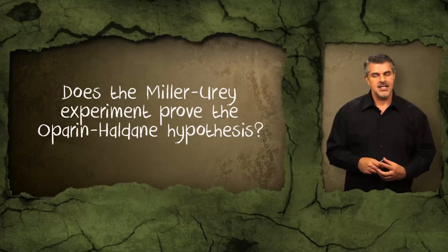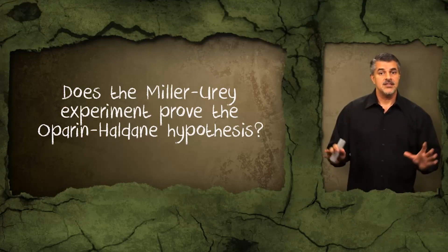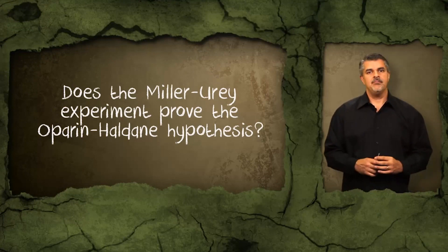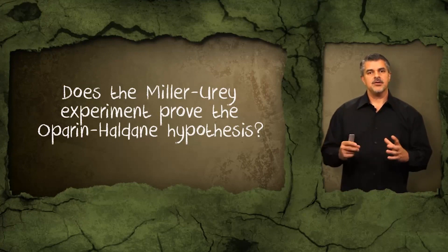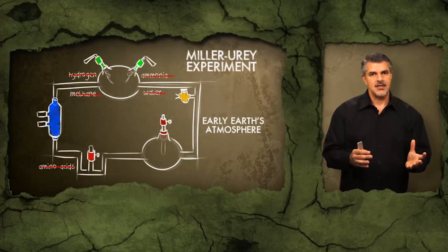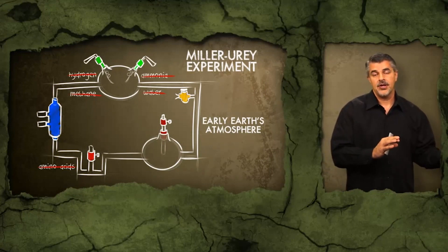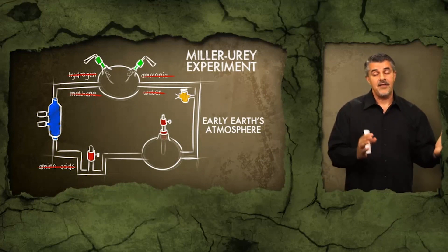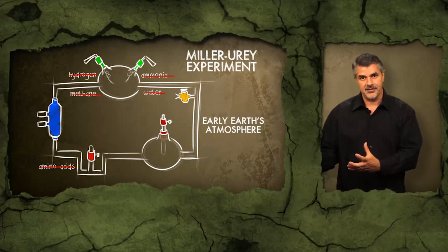But what's interesting — and this is something that doesn't show up in biology textbooks — is that the atmosphere that Miller simulated in his experiments, supposedly representing the early Earth's atmosphere, is not the atmosphere that we now know existed on the early Earth.